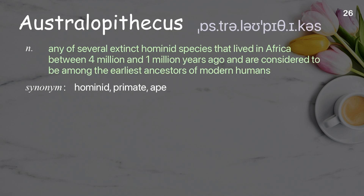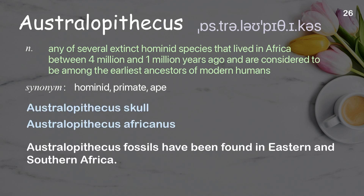Australopithecus: any of several extinct hominid species that lived in Africa between 4 million and 1 million years ago and are considered to be among the earliest ancestors of modern humans. Examples: Australopithecus skull, Australopithecus africanus. Australopithecus fossils have been found in eastern and southern Africa.